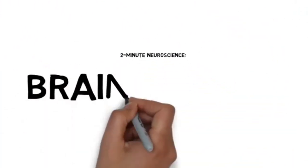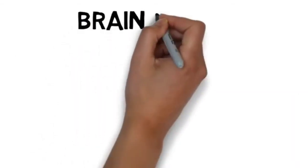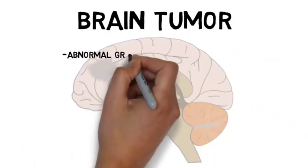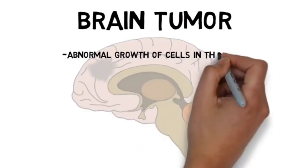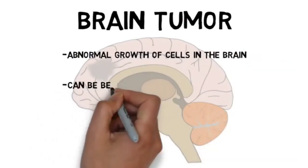In this installment, I will discuss brain tumors. A brain tumor is an abnormal growth of cells that occurs in the brain. Brain tumors, like other tumors, can be benign or malignant.